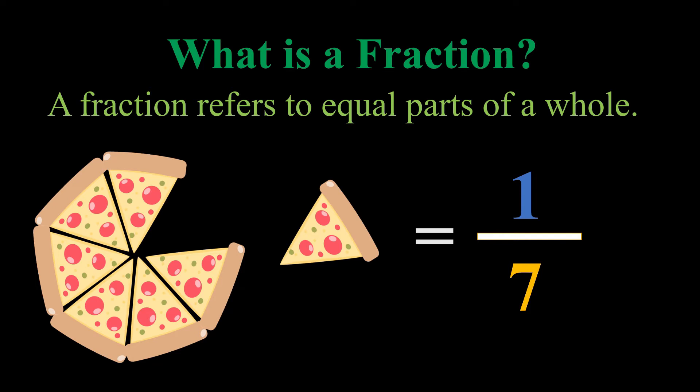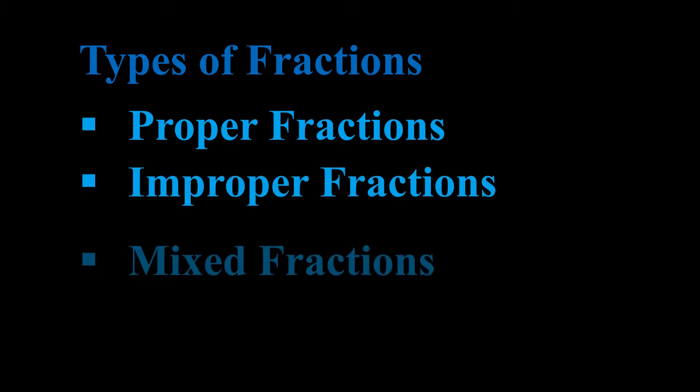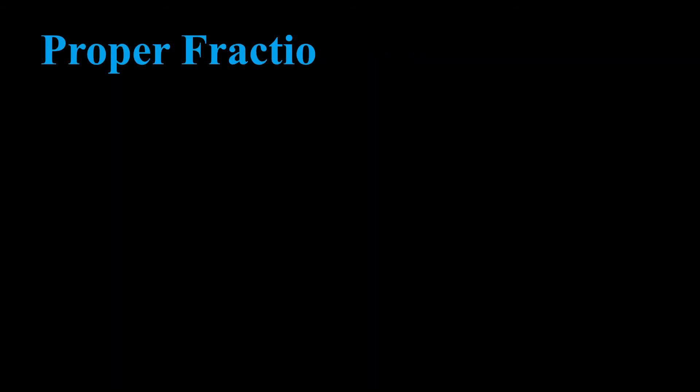One seventh is the same as one out of seven — we took one out of a possible seven slices. So that's what we mean when we say a fraction refers to equal parts of a whole. Now let's look at the three major types of fractions, which includes proper fractions, improper fractions, and mixed fractions.